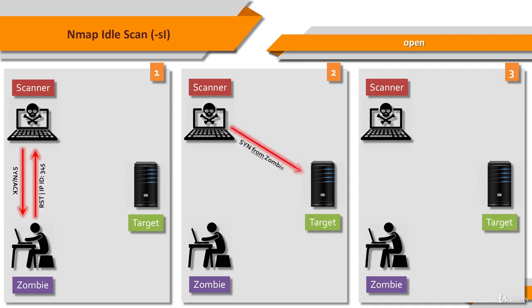The second step is to forge a SYN packet from the zombie to the target system. The target sends a SYN/ACK in response to the SYN that appears to come from the zombie. Since the zombie does not expect the packet, it sends back a RST, and so it increments its IPID in the process.